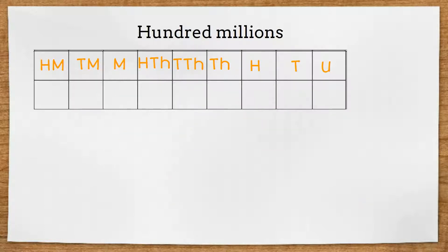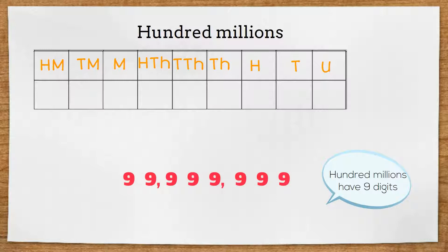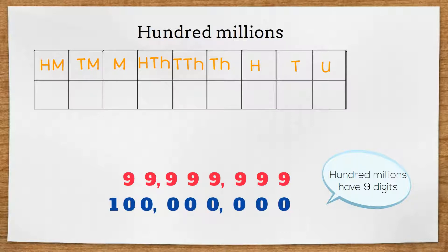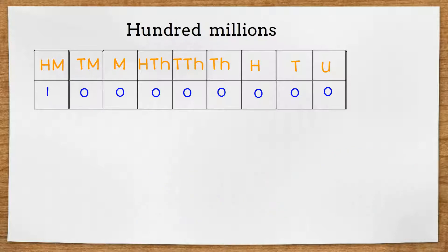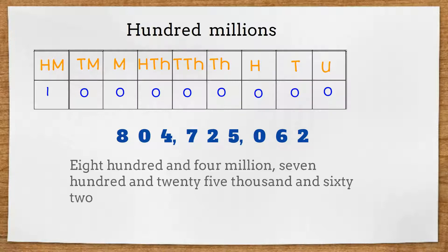After ten million we have hundred million, which is nine digits. Counting up, we would get to ninety-nine million nine hundred and ninety-nine thousand nine hundred and ninety-nine before a hundred million. A number like eight zero four seven two five zero six two will be read as eight hundred and four million seven hundred and twenty-five thousand and sixty-two.